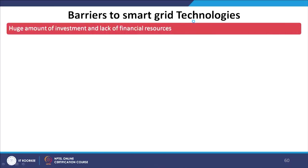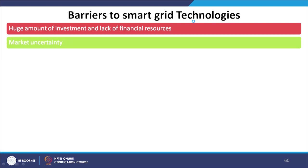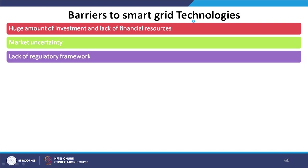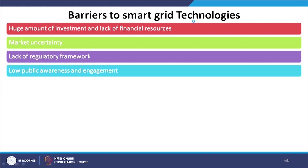Though IEEE standards suggest recommendations for smart grid development, there are few barriers to smart grid technologies. A major barrier is the huge amount of investment required and lack of financial resources. Market uncertainty, lack of regulatory frameworks — with no strong established framework in place today — and low public awareness and engagement are also significant. For example, the public is not aware enough to understand whether they are operating during peak or off-peak hours, how they can contribute to green energy, or how they can reduce energy demand during peak hours. We need awareness programs to educate all regular energy users.